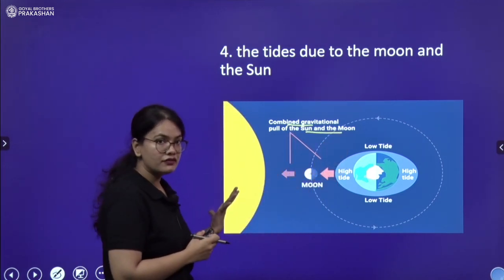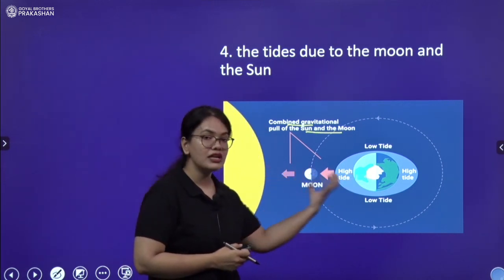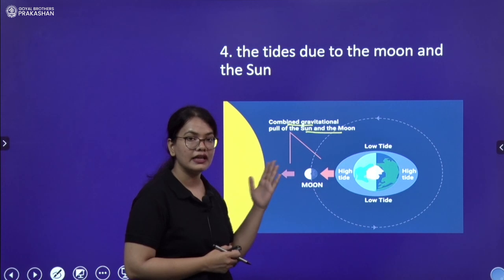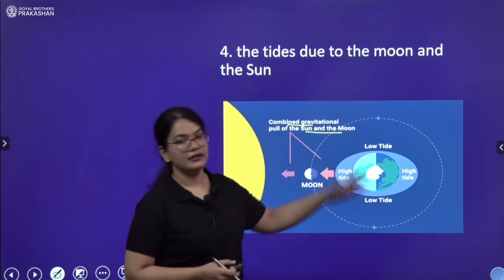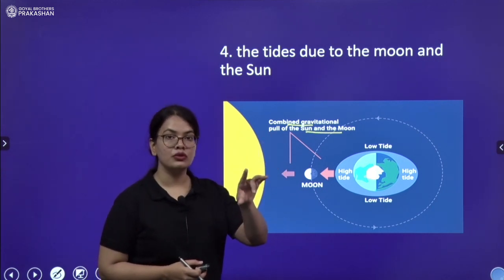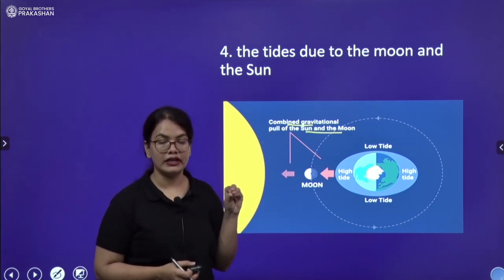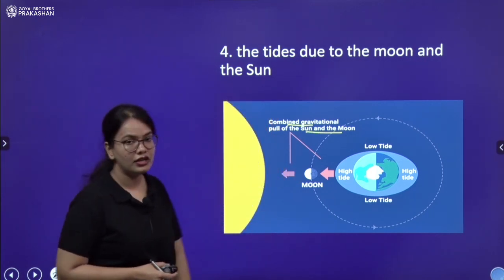So, this gravitational force attracts the water and it creates high tide and on the other side it creates low tide. The attraction of sun and moon on the water bodies creates high tide. So, they are also responsible for tides.